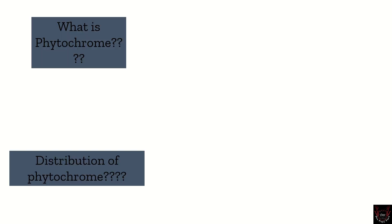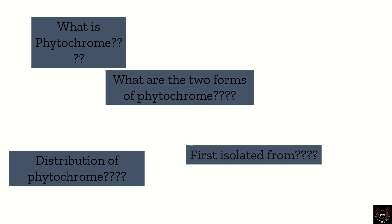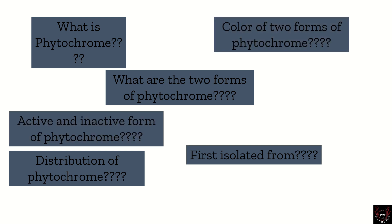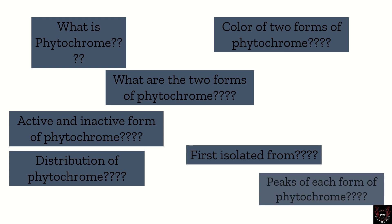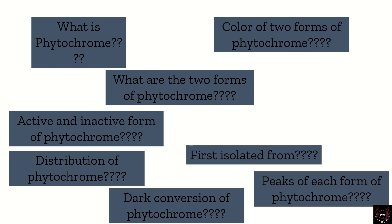What you need to remember from this video: what is phytochrome, distribution of phytochrome, first isolated from what, the two forms of phytochrome, active and inactive forms, color of two forms, peaks of each form, dark conversion, and role of phytochrome. Thank you for watching.